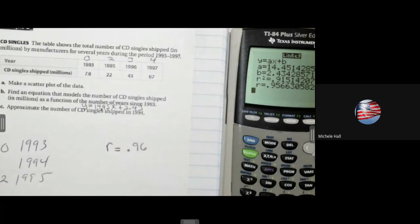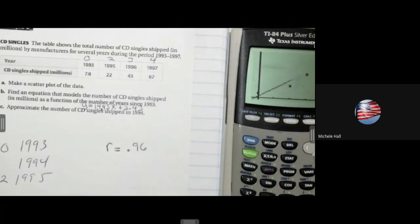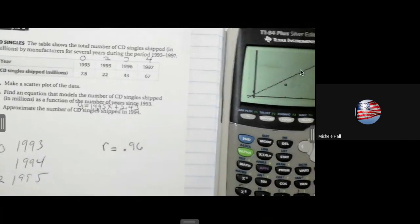All right, the last thing that we need to do is look at the line and then we can make some predictions. We can find and predict other years. So if I go to graph, there's my line already in there for me. I did not have to manually go and punch that in.